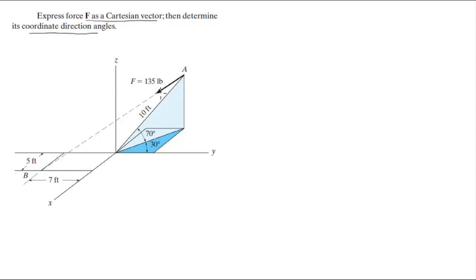They're not really telling you what F is doing, but what they're telling you is that it's along the same dotted line, and this dotted line is the line from A to B. So what we're going to do is find the position of A, then find the position of B, express them as Cartesian vectors, then find the vector from A to B by subtracting B minus A. When we have that vector, we can calculate the coordinate direction angles, and those are going to be the same coordinate direction angles of this line.